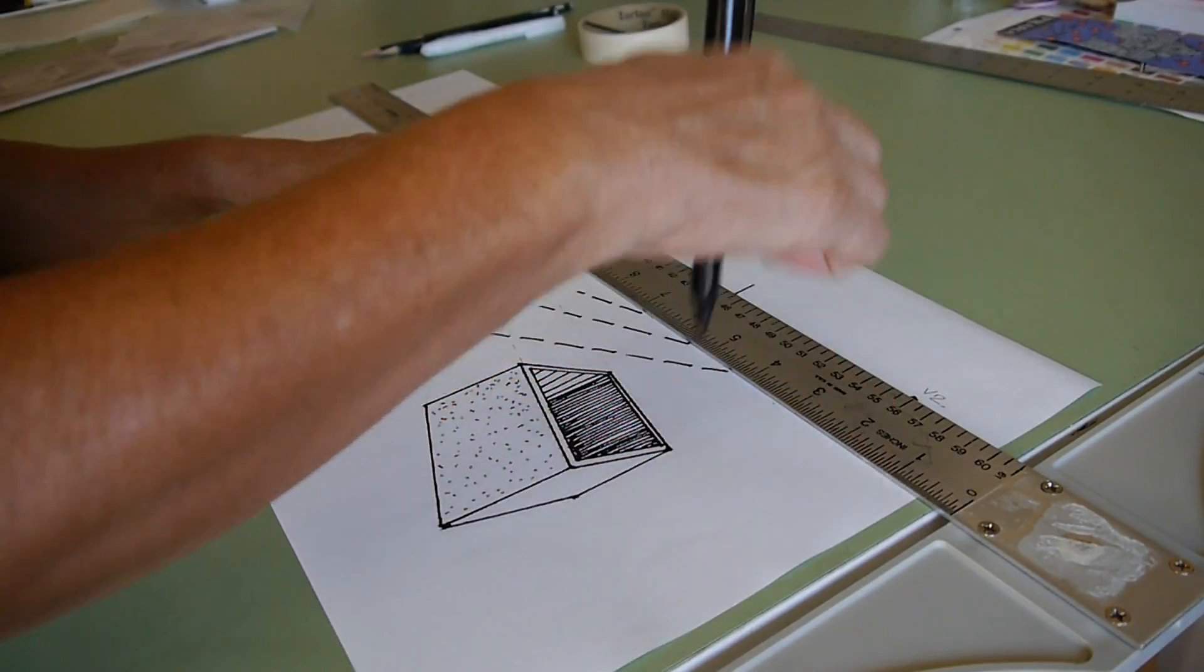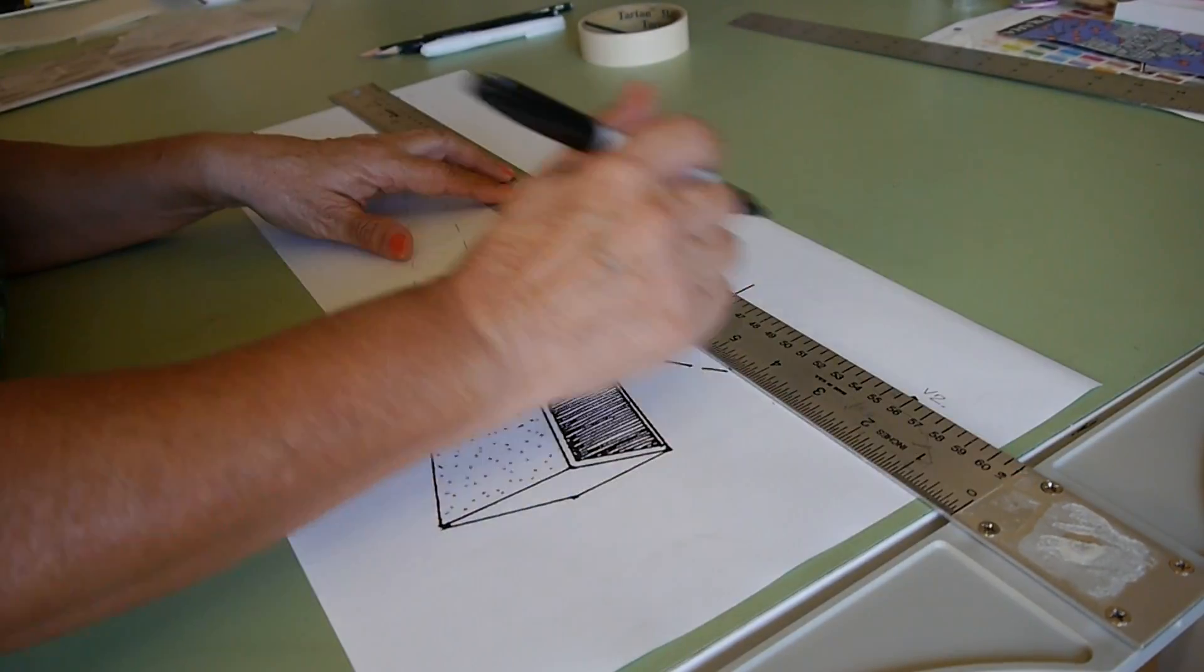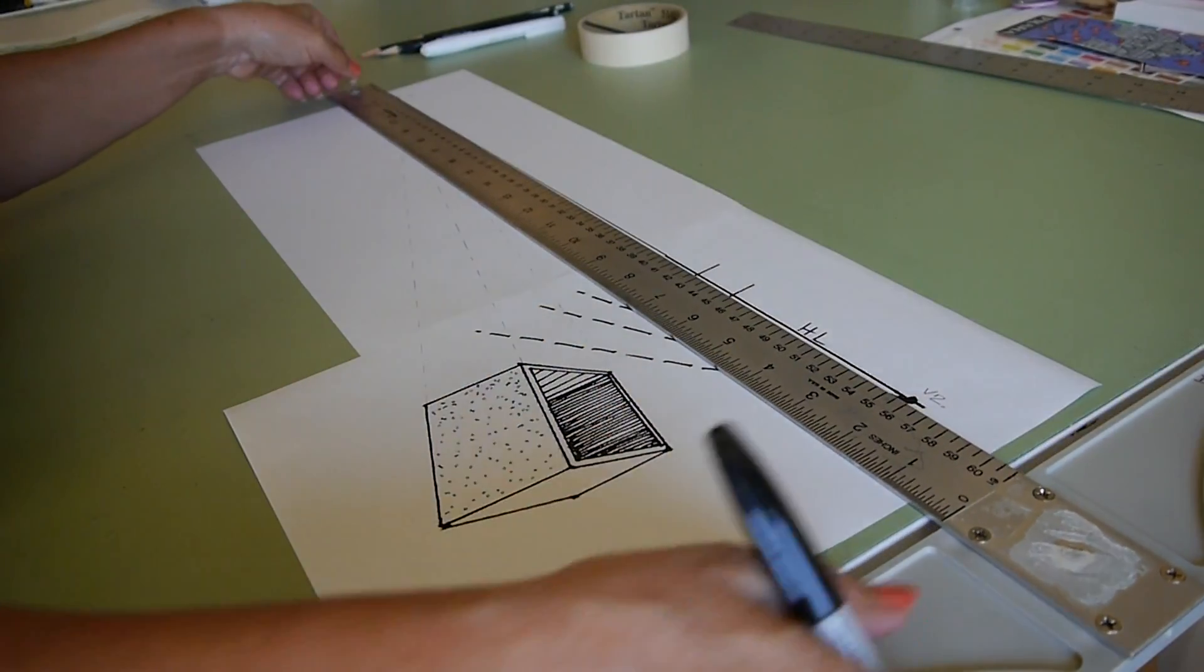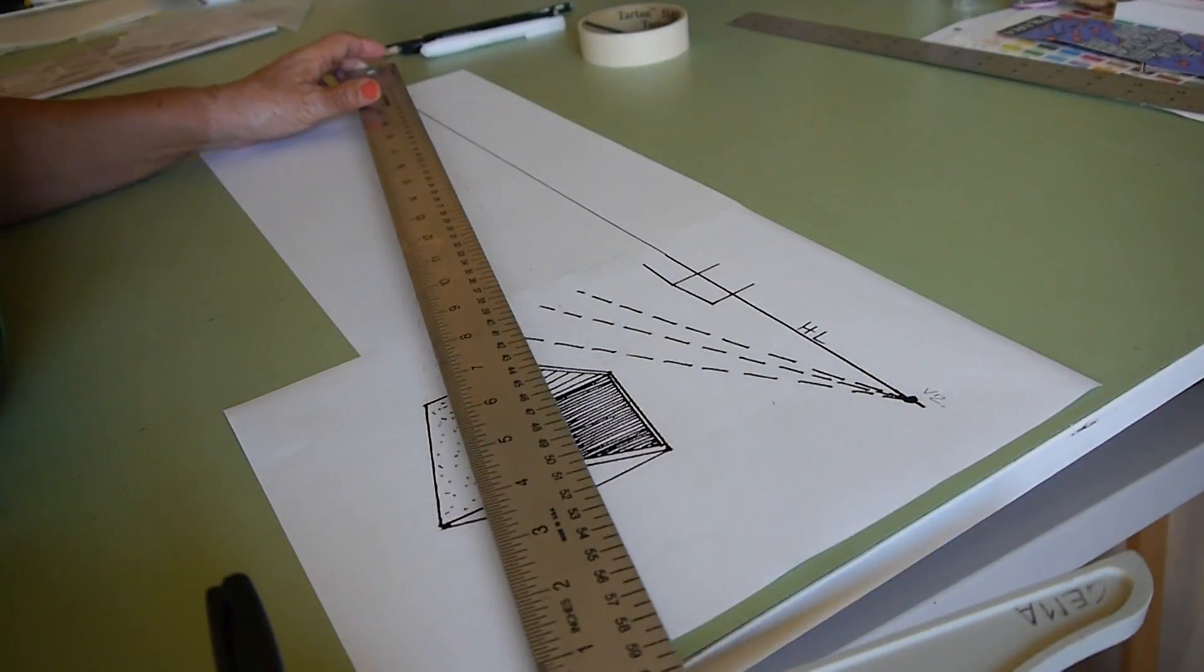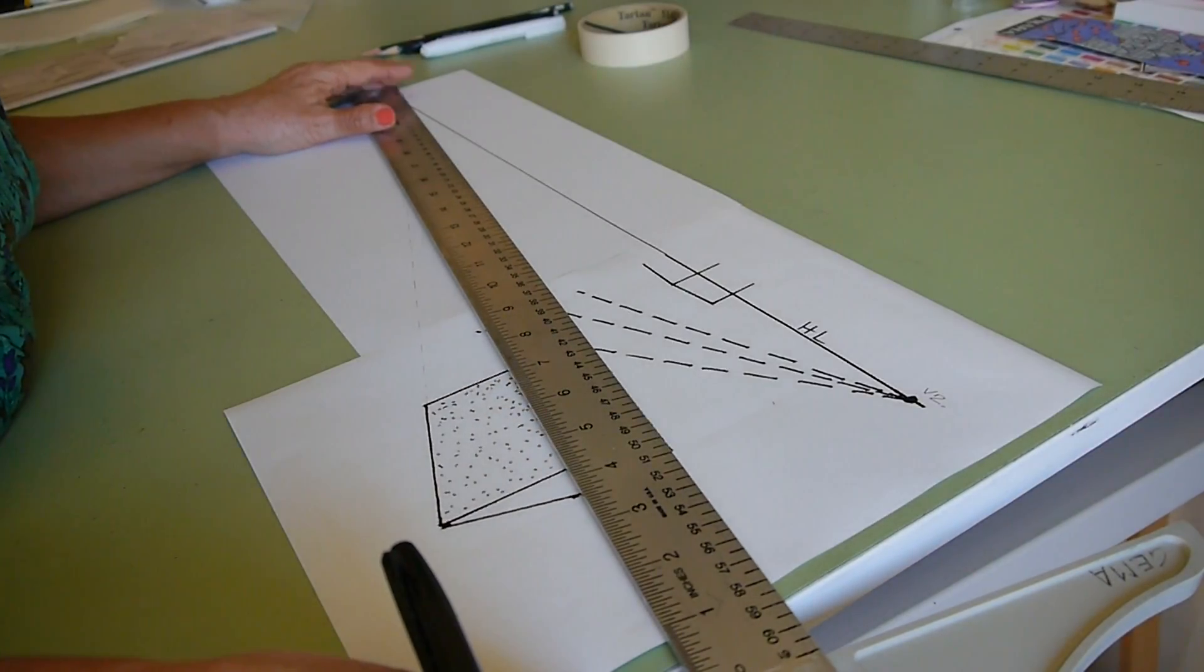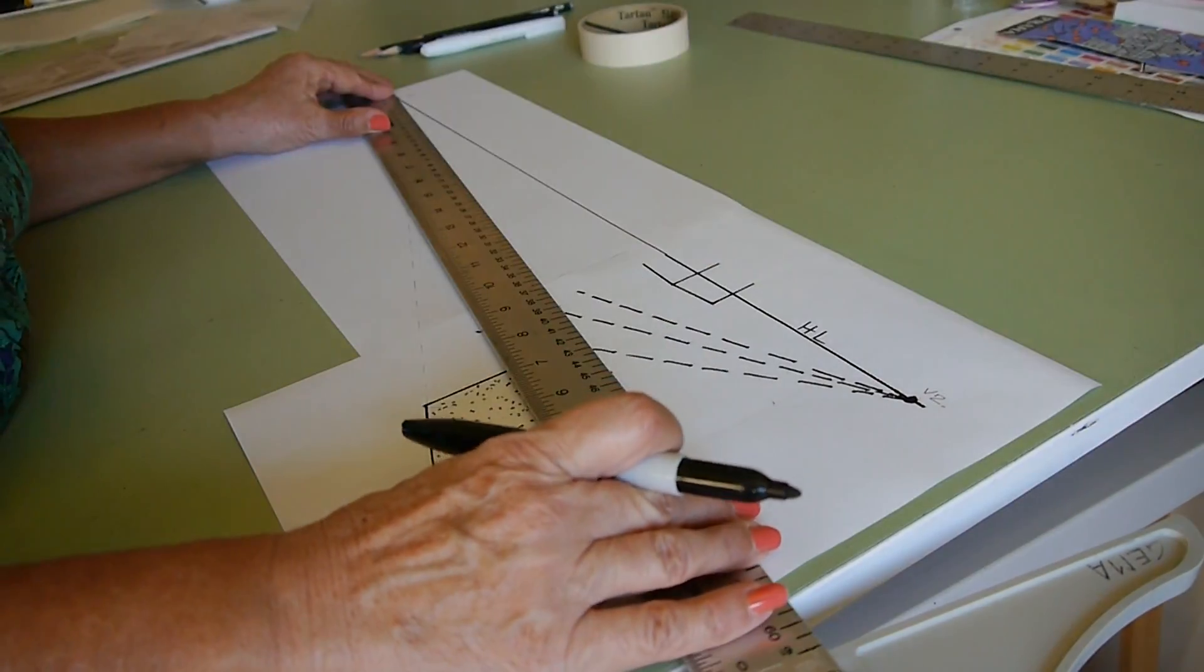So you're just going to make a line, continue with the horizon line that you have here. This is the horizon line and what you're going to do, you're going to find the vanishing point where all these lines will meet on the horizon. It's going to be the back first.